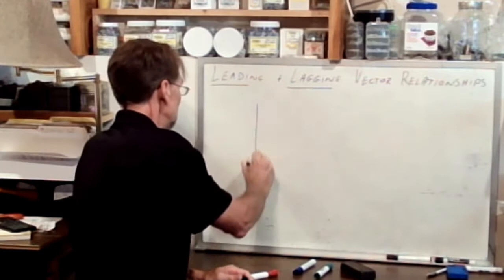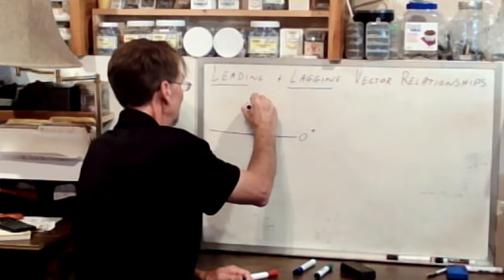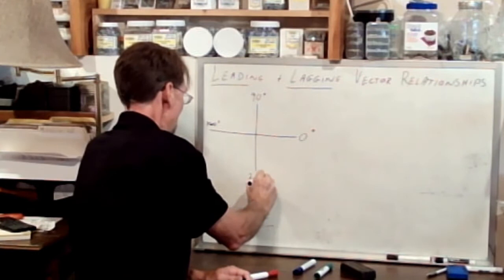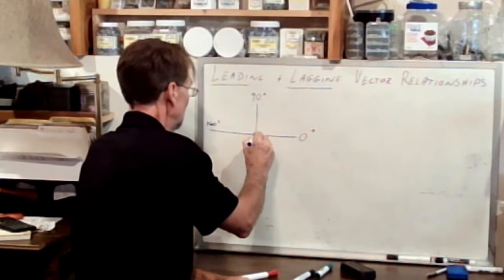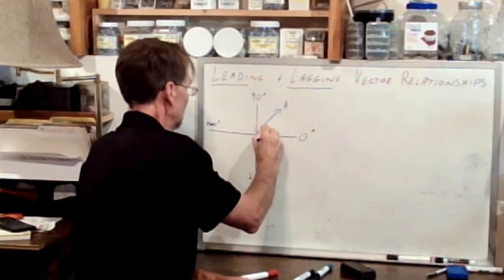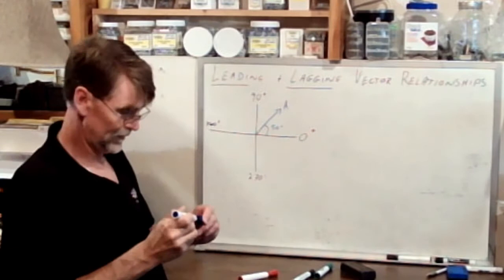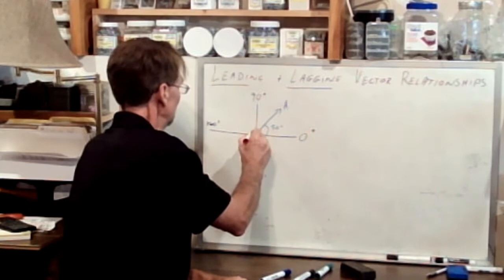So let's draw our grid: zero degrees, 90 degrees, 180 degrees, and 270 degrees. Let's use blue. Let's call that vector A with the direction of 50 degrees.